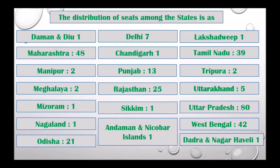Continuing the distribution: Odisha 21, Delhi 7, Chandigarh 1, Punjab 13, Rajasthan 25, Sikkim 1, Andaman & Nicobar Islands 1, Lakshadweep 1, Tamil Nadu 39, Tripura 2, Uttarakhand 5, Uttar Pradesh 80, West Bengal 42, Dadra & Nagar Haveli 1.